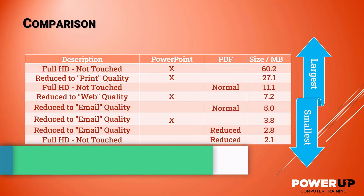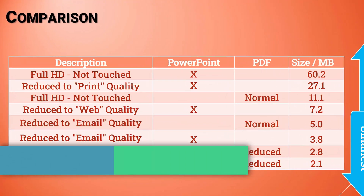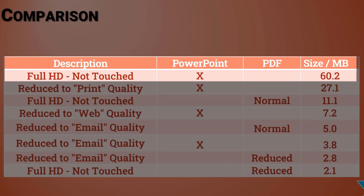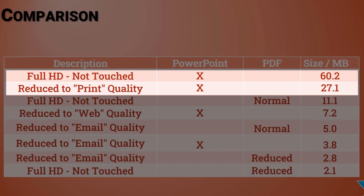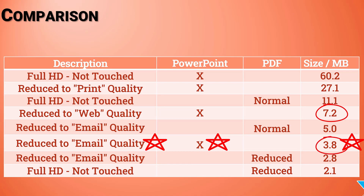Let's see the results and the trade-offs. The original 16-slide presentation is a whopping 60 megabytes. When using compressed photos at print quality, it cuts down to half, staying as a PowerPoint file. If instead I chose to compress to web quality, it drops 88% to seven megabytes — that might be enough, but it may still be too big to email. Going to email quality and keeping it as a PowerPoint presentation, the file size goes down to just 3.8 megabytes, but I do start to lose visible quality, so it's not my preferred choice.